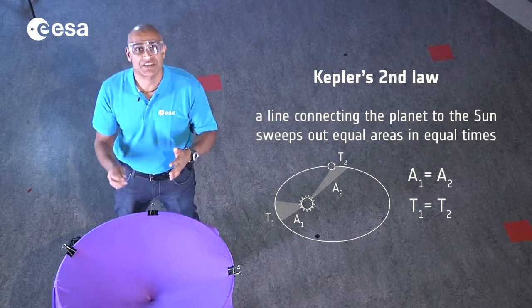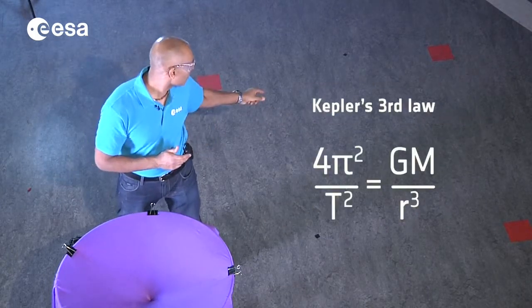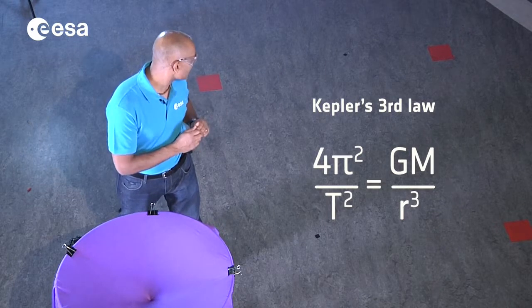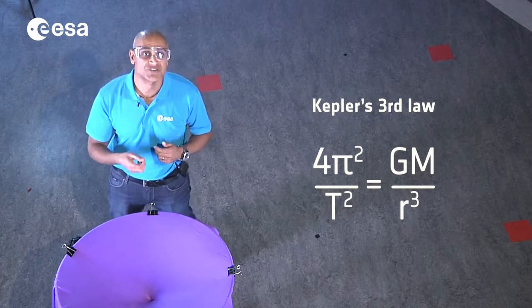Kepler's third law: the orbital period squared is proportional to the orbital radius cubed.